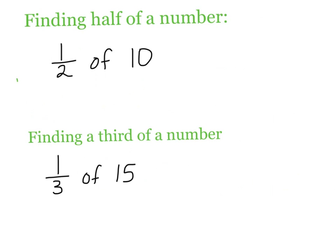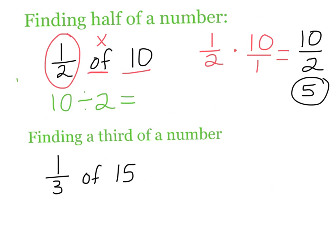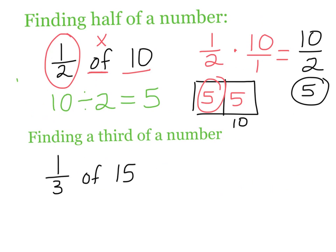This slide shows you how to find half of a number. If I wanted to find half of 10, you can think of it as a part of this number, so you do 1 half times 10, putting a 1 underneath. Straight across: 1 times 10 is 10, and 2 times 1 is 2. Then 10 divided by 2 gives me 5. Taking half of something is the same as dividing by 2. So if this rectangle represents 10 and I split it in 2, I get 5 and 5 — I only need 1 part, so the answer is 5.